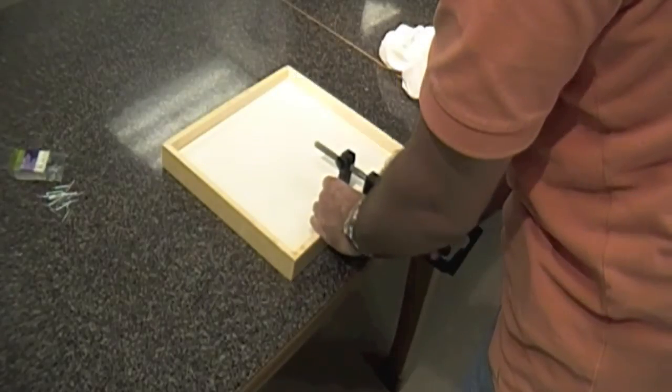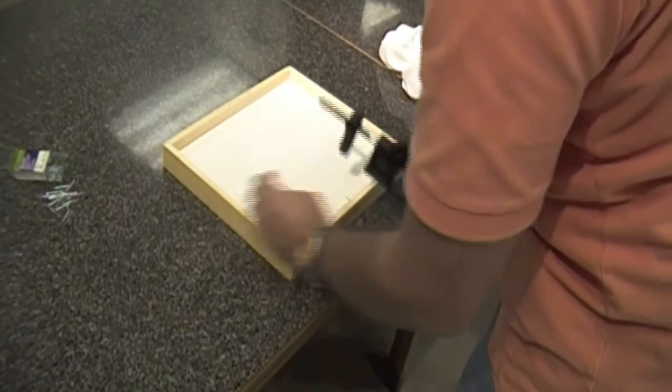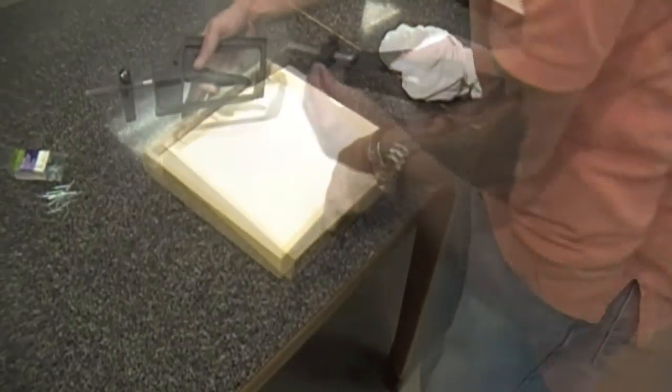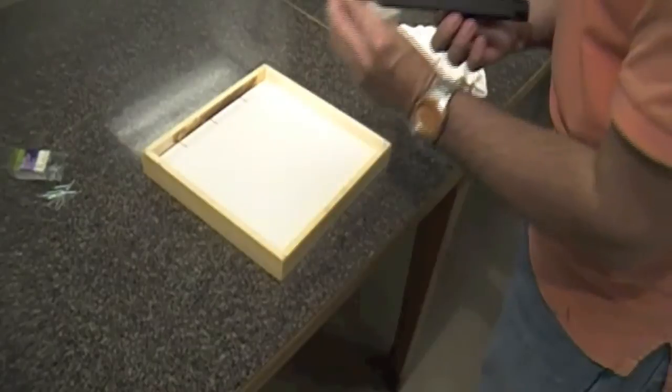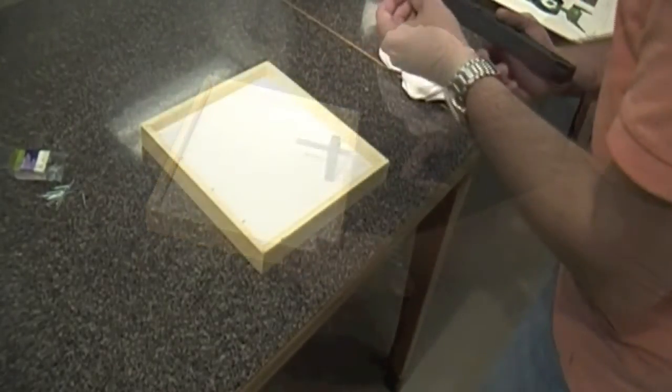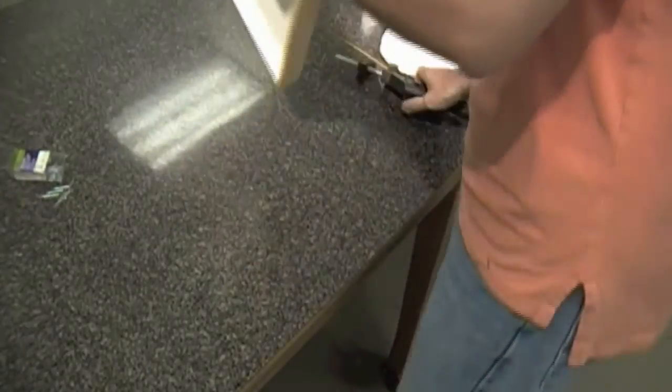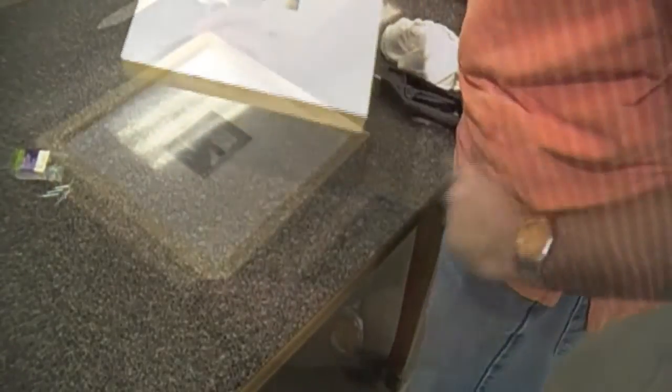I usually use a point driver. That's what this little tool is. You can do the same thing using glazer's points, which they use for window making to put the glass in windows. These are just wire brads that are being used. But you'll put those all the way around the inside and hold the piece up against the glass or plexiglass.